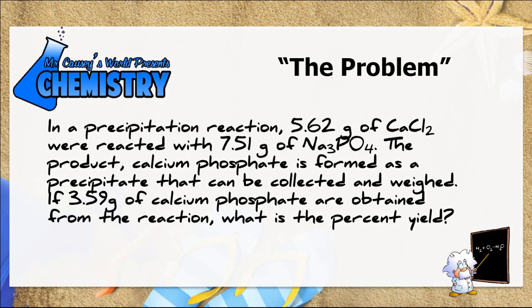If 3.59 grams of calcium phosphate are obtained from the reaction, what is the percent yield? When you look at this problem, you really need to take note that there are 5.62 grams of calcium chloride and 7.51 grams of sodium phosphate. What's going to be important here is determining which one is the limiting reactant.